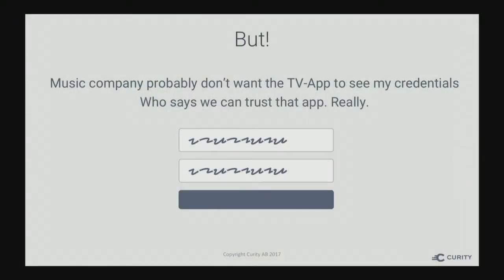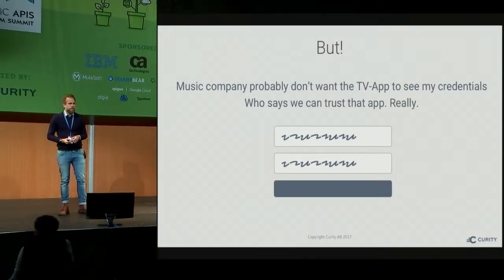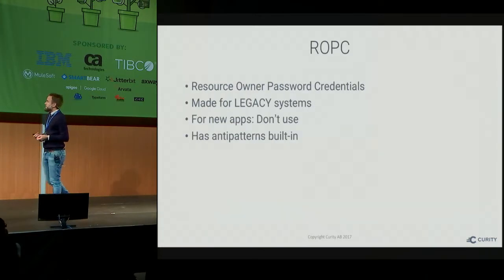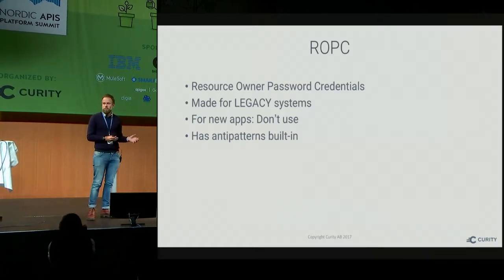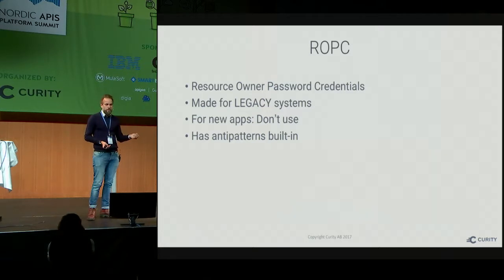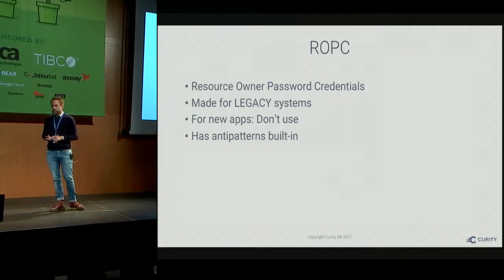But there are a few problems with this. Most streaming services and big companies don't really want your TV app to get their users' passwords. Who says we can trust this app? Who built it? Maybe it was the music service, but probably it was somebody else who thought 'this music service has a great API, let's build a client.' The resource owner flow is really not meant for this — it's there to solve a legacy problem. If we're building a new system, we should never use it. It has built-in anti-patterns: you're taking the password and giving it to a third party, which is exactly what OAuth was designed to prevent.